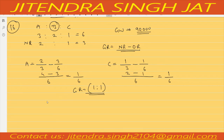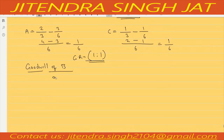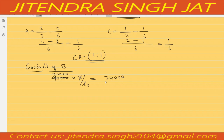Goodwill of B = 90,000 × 2/6 = 30,000. A and C will give this goodwill in their gaining ratio of 1:1, so A will give 15,000 and C will give 15,000.